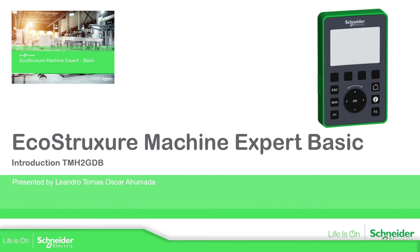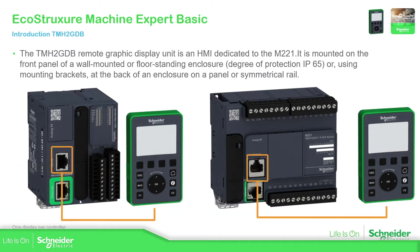This is the display, and it can only be used on the Modicon M221. It must be used on serial line one. As you can see, you have two different types of M221 PLCs, and in both of them it must be used on the serial line port. We only have one display per PLC. If you have the compact version and you add another serial line cartridge, you cannot use the display connected to that cartridge — it must be serial line one.